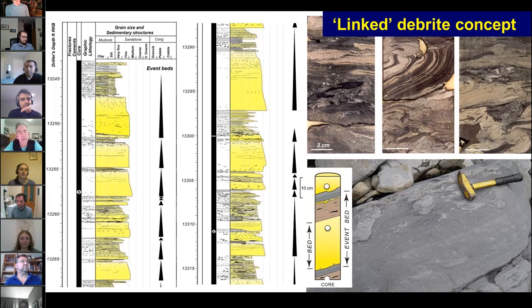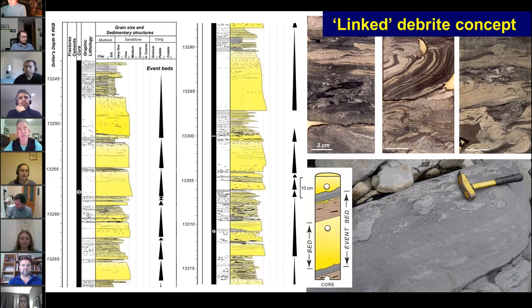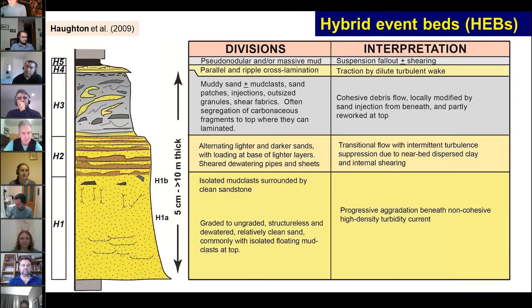At the same time, other groups were working particularly on transitional flows. Don Lowe, Martin Guy, for example in Britannia in the North Sea, were seeing evidence for flows that were transitional between laminar and turbulent. So we matured the concept a bit.